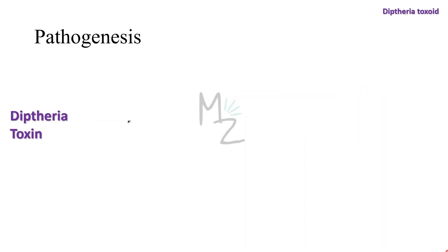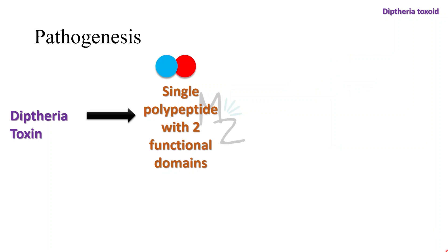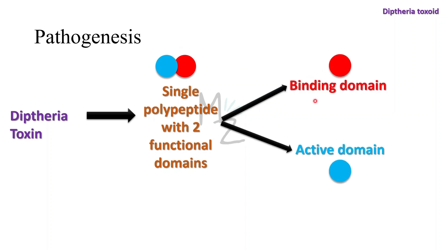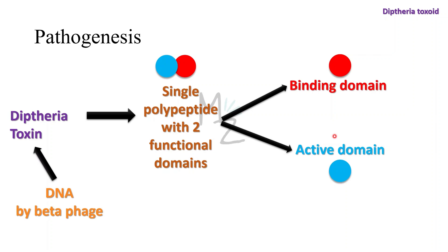The diphtheria toxin is a single polypeptide with two functional domains. The first is the binding domain, which mediates binding of the toxin to glycoprotein receptors on the cell membrane. The second is the active domain, which possesses enzymatic activity that cleaves nicotinamide from NAD and transfers the remaining ADP-ribose to elongation factor 2 (EF2), thereby inactivating it. The DNA that codes for diphtheria toxin is part of the DNA of the beta-phage that infects Corynebacterium diphtheriae.